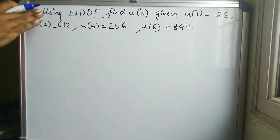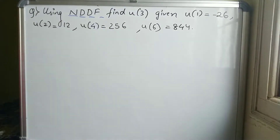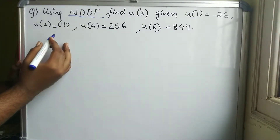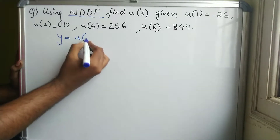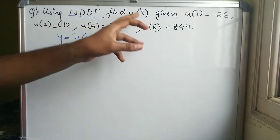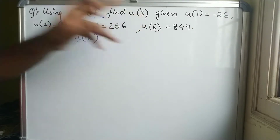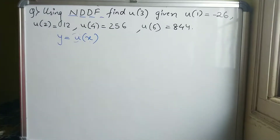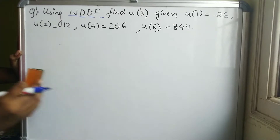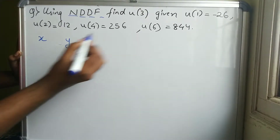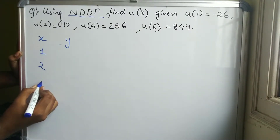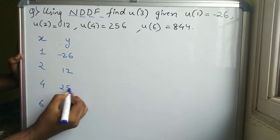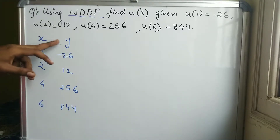Now let's solve a problem. The first question is: using Newton's Divided Difference Formula, find u(3), given u(1), u(2), u(4), u(6) and corresponding values. Here y = u is a function of x, so we need to find the value at x = 3. We form the table with x values: 1, 2, 4, 6 and y values: -26, 12, 256, 844.